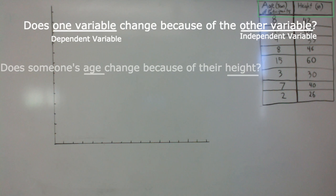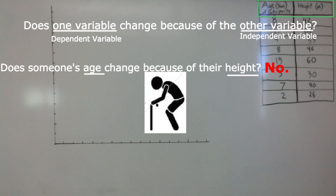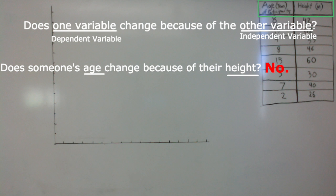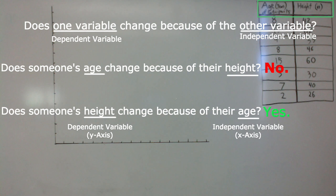In the case of our data table, we'll ask: can someone's age change because of their height? Your gut reaction should be no — someone's age does not change because they grow taller. If that were true, basketball players would be some of the oldest people on the planet, which is nonsense because being tall doesn't make you old. So let's ask the opposite: can someone's height change because of their age? Yes — kids can grow taller because they get older. This means height depends on age, so height is our dependent variable and age is our independent variable.